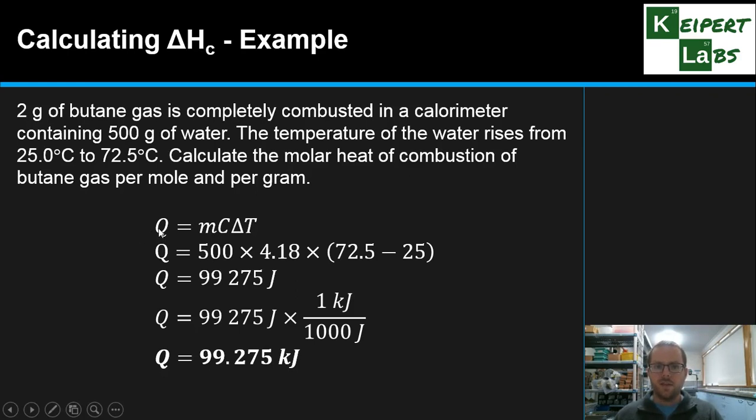So firstly, Q equals MC delta T. This is the formula we need to look at. How much energy came out of the fuel and then went into the water? So 500 grams of water with this constant value, and its temperature change was the difference between those two temperatures. So we get a value of 99,275 joules. But we're going to need this value of Q in kilojoules. So we're going to divide by 1,000, or times this conversion factor of 1 kilojoule for every 1,000 joules. So we get 99.275 kilojoules. Notice I haven't rounded anything off yet, because I haven't achieved my final answer.